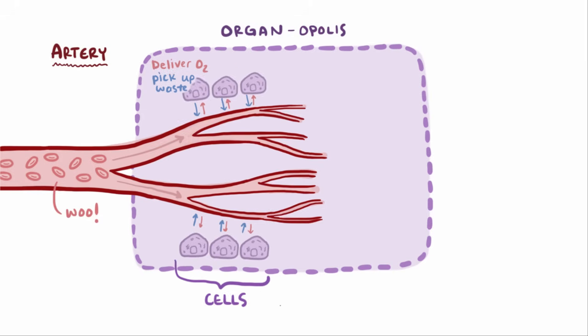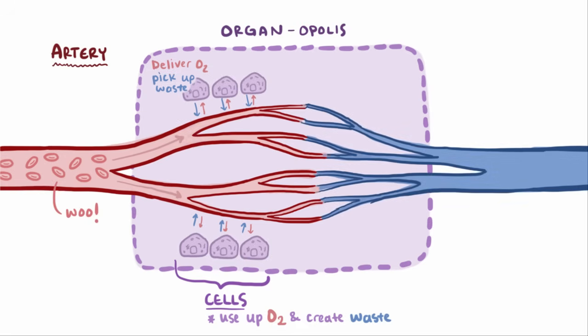Organopolis is made up of thousands of cells, like homes, that use up oxygen and create waste that needs to be picked up. The deoxygenated blood cells drain out through the veins and go back towards the heart.